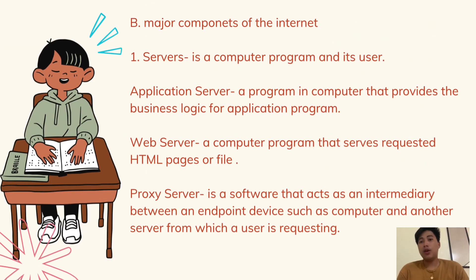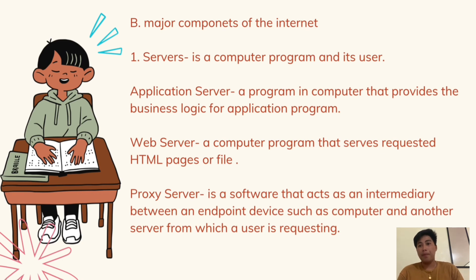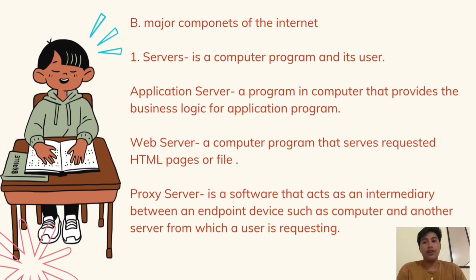Components of the Internet. Number one: Server. A server is a computer program and its user. An Application Server is a program in a computer that provides the business logic of an application program. A Web Server is a computer program that serves requested HTML pages or files. A Proxy Server is software that acts as an intermediary between an endpoint device such as a computer and another server from which a user is requesting.